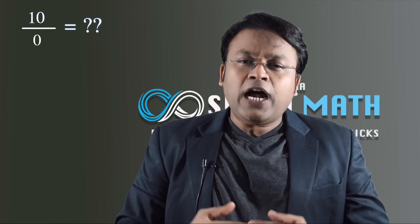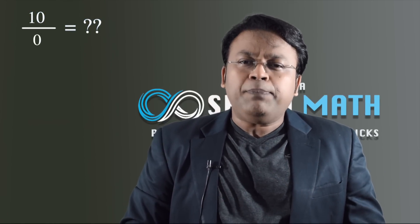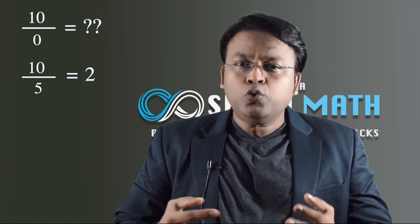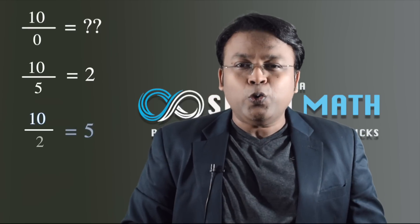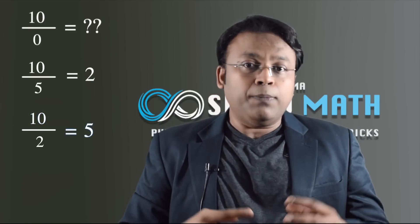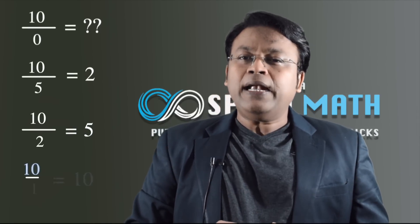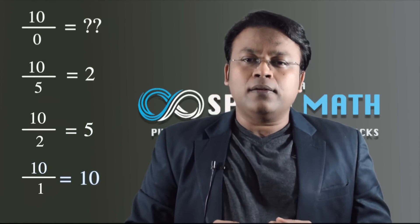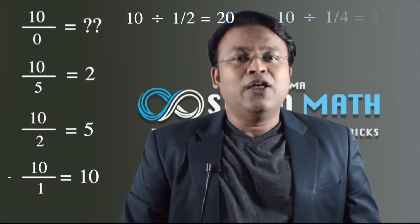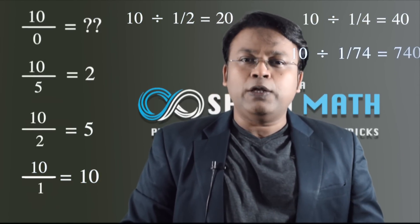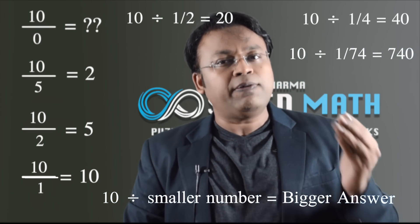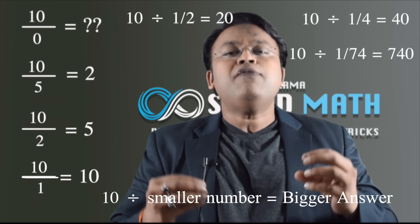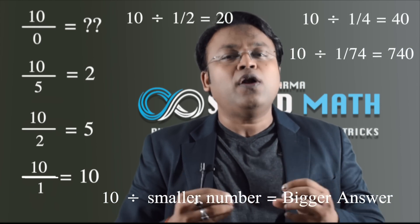To think about what you might get if you divided say 10 by 0, let's start by dividing 10 by 5 — the answer is 2. But if you divide 10 by a smaller number like 2, you get a bigger number: 5. What about 10 divided by 1? A bigger number still: 10. 10 divided by one-half is 20, divided by one-quarter is 40, divided by one-thirty-second is 320.